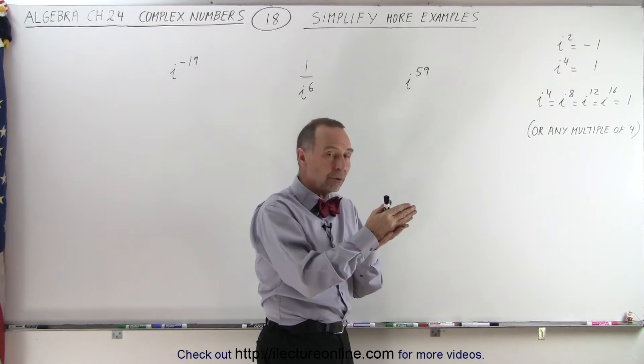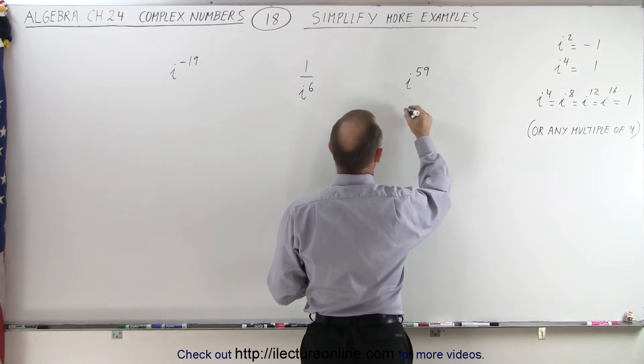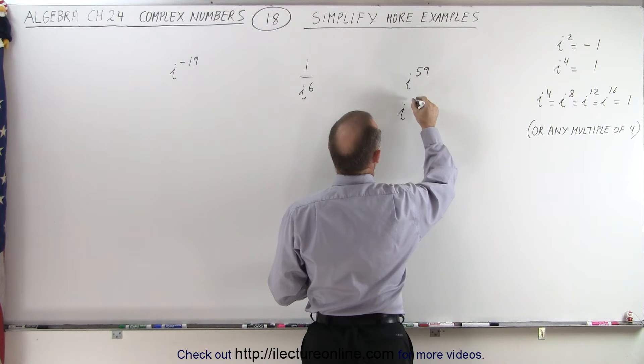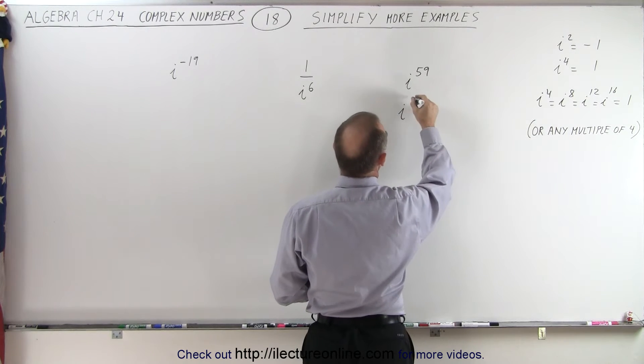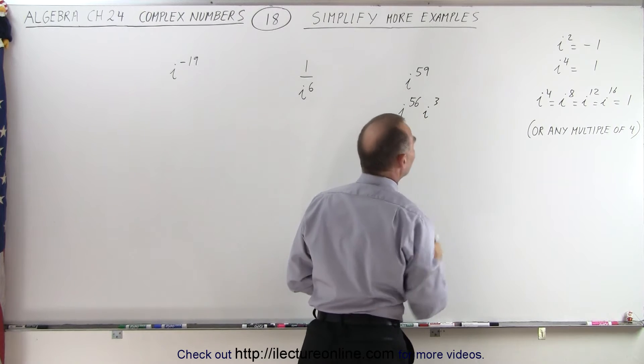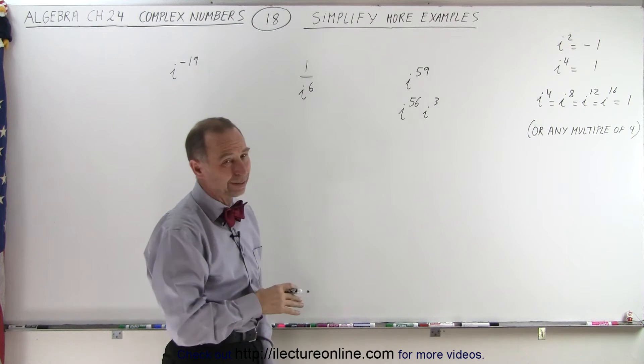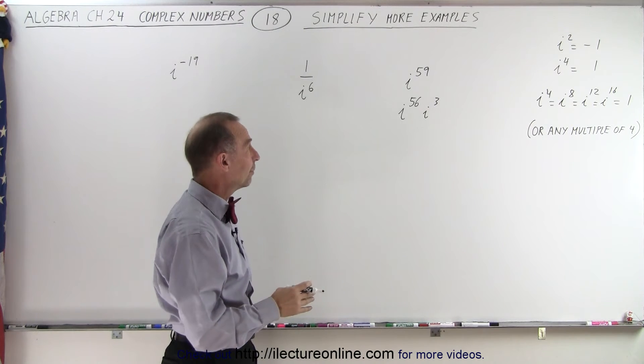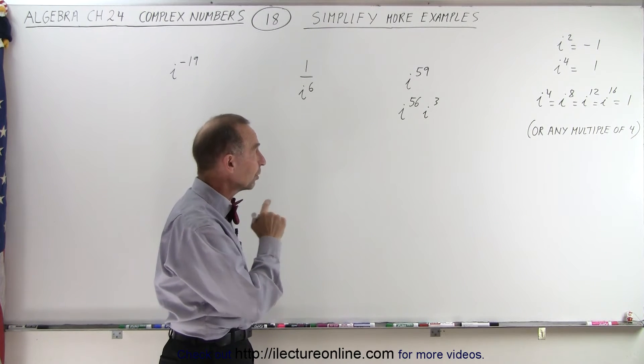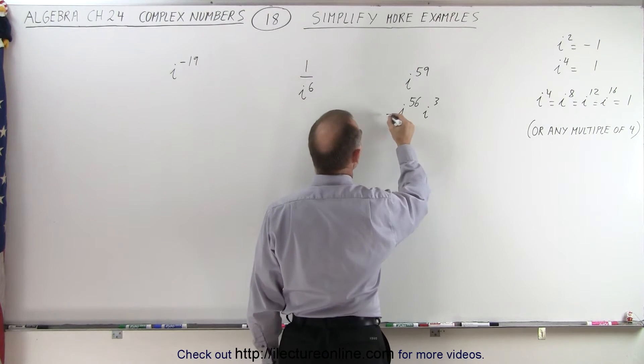So what we need to do is rewrite this in terms of i to the multiple of 4 times i to what's remaining. And so I can see here that this can be written as i to the 56 times i to the 3rd because 56 is 14 times 4. We don't really care how many times 4 it is because we know that as long as it's a multiple of 4, we're good.